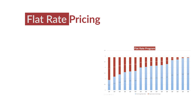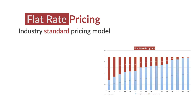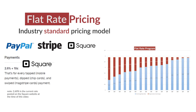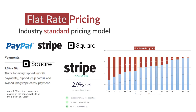Flat rate pricing is simply a variation of tier-based pricing and has been the industry standard for payment aggregators like PayPal, Stripe, and Square. Typically, one rate is advertised — like 2.75% or 2.9% — for qualified and mid-qualified transactions. There's also a non-qualified rate that isn't often talked about, but it does factor into your overall costs.